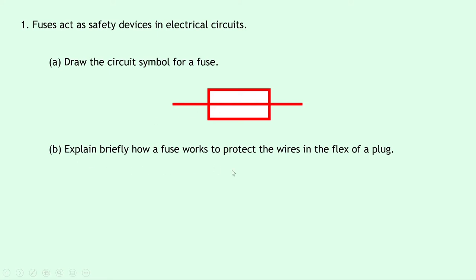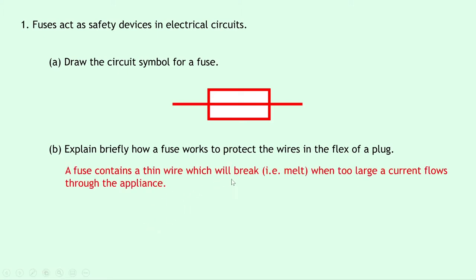Part B then says to explain briefly how a fuse works to protect the wires in the flex of a plug. Well, remember that a fuse contains a thin wire which will break, i.e. melt, when too large a current flows through the appliance. So in this way it acts as a safety device to protect the wires and the flex of a plug. It's not actually trying to protect the plug itself, it's more the wires inside the flex.